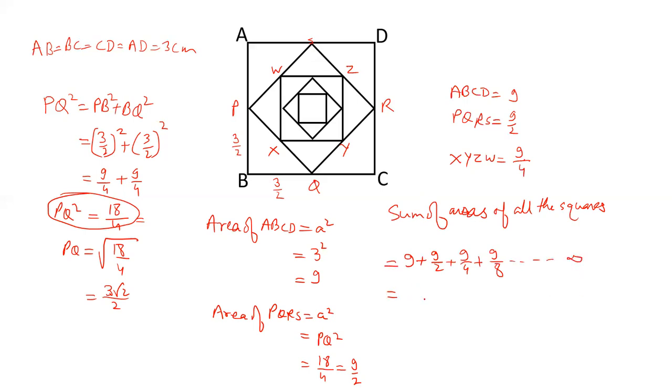And this is a GP up to infinity and the sum of infinity of a GP is given by A upon 1 minus R. Here A is the first term which is 9 and R is common ratio which is 1 by 2.